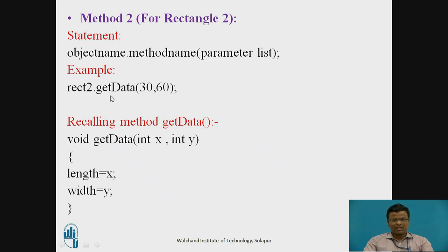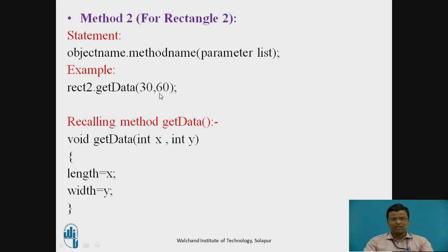Here we are recalling the two methods declared already — the getData method and the rectArea method. The getData method consists of the declaration of variables. In the general code, the format is: object name dot method name with parameter list in brackets, where the parameter list consists of the values for the variables. So rect2 is the object name for the second rectangle, dot getData is the method name, and 30 and 60 are the values for the variables. Here, 30 will be for x and 60 will be for y, but since x = length and y = width, that means length = 30 and width = 60.